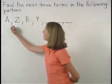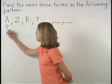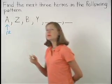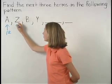Notice that A is the first letter of the alphabet, and Z is the last letter of the alphabet.